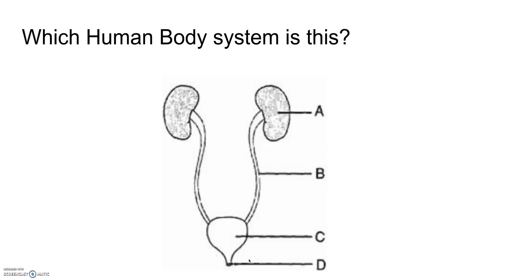Now what human body system is this? This is part of the excretory system, the urinary system, where A is the kidneys, B is the ureter, C is the bladder, and D is the urethra.